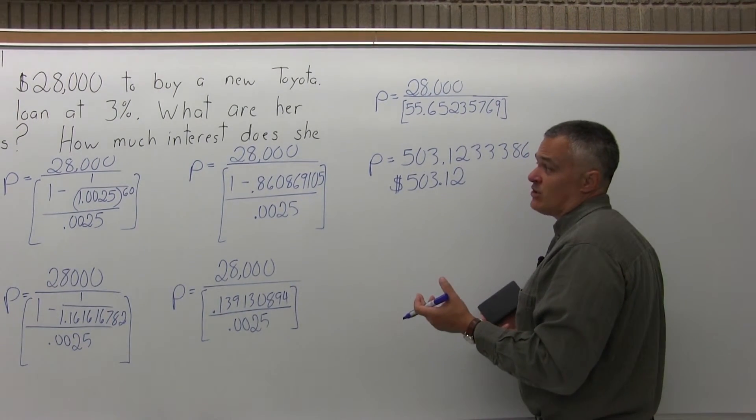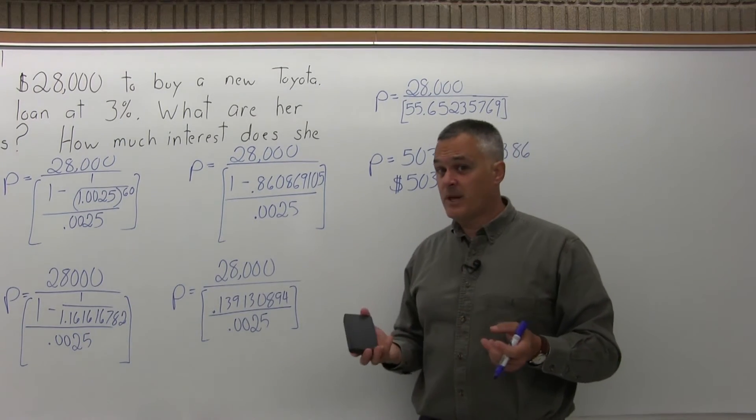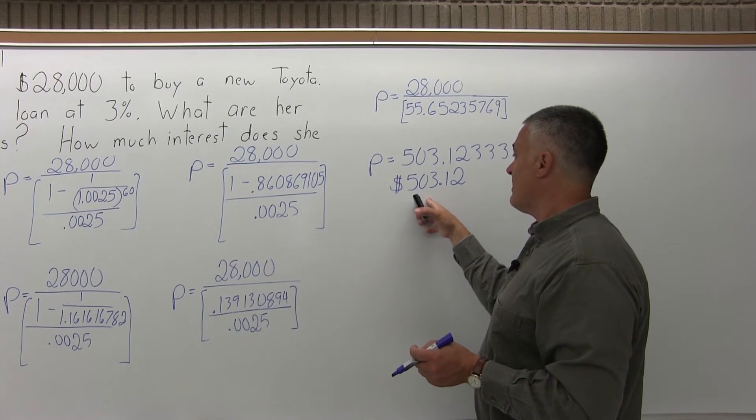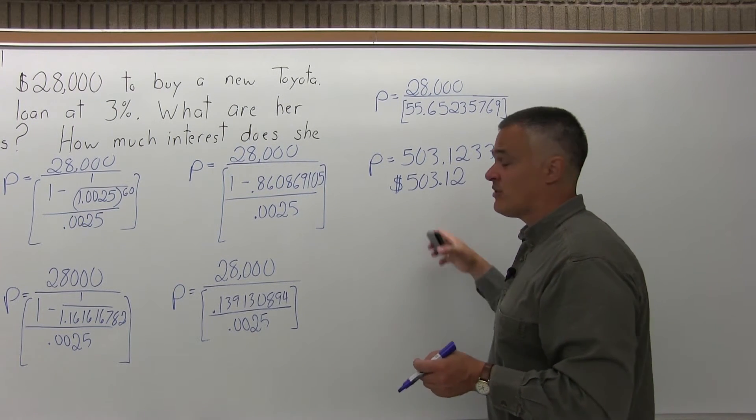Well, on a five-year loan, you make 12 payments per year. For five years, that's 60 payments. So Sandy's going to make 60 payments of $503.12.